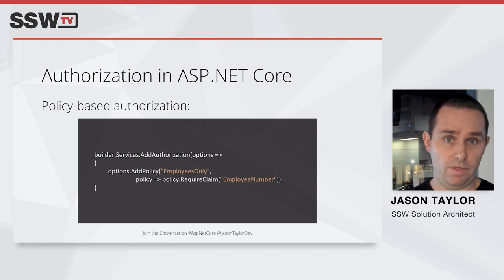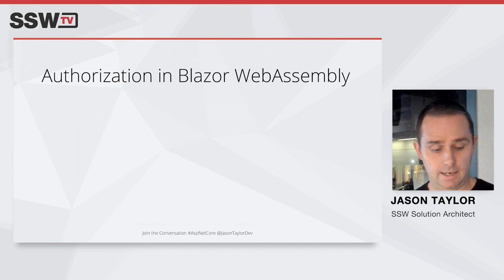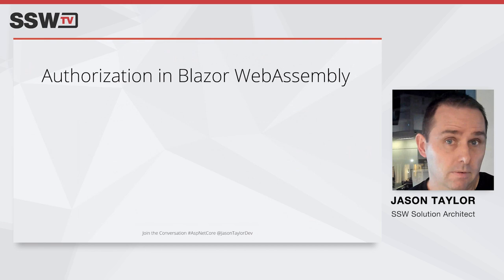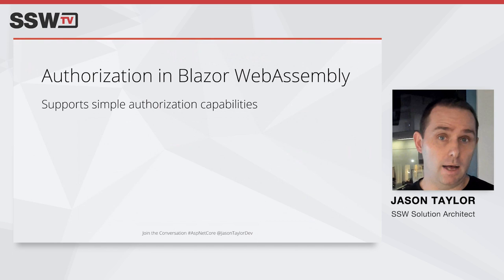Now let's talk about authorization in Blazor WebAssembly. The sample code tonight will use Blazor WebAssembly, which has similar authorization capabilities as ASP.NET Core since Blazor WebAssembly is an ASP.NET Core technology. You still get access to the Authorize attribute, but there are also components you can leverage for building views — you can assess simple authorization rules, write authorization based on roles, claims, or policies, and use the AuthorizeView component.